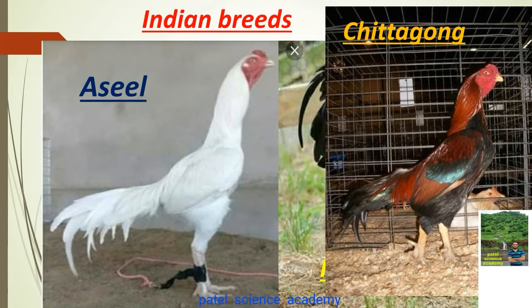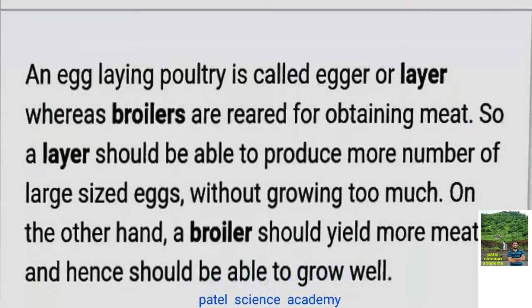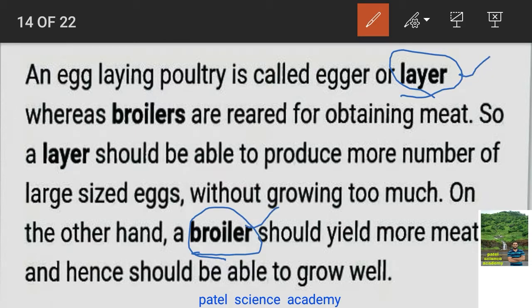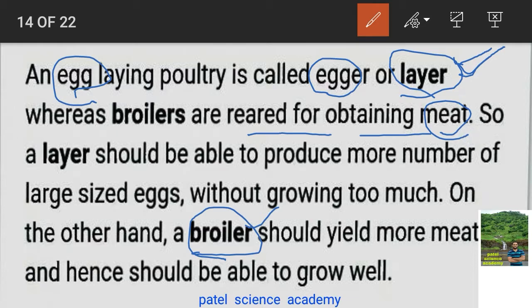The Chittagong breed is also from India. Now, there are two important terms: layer and broiler. A layer is a chicken domesticated only for eggs, while a broiler is reared for obtaining meat. If a chicken is kept for meat, it is called a broiler; if kept for eggs, it is called a layer.